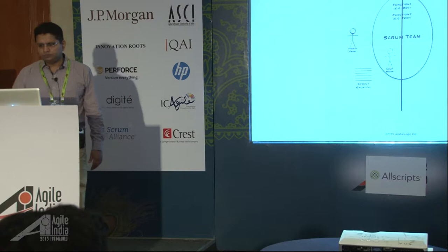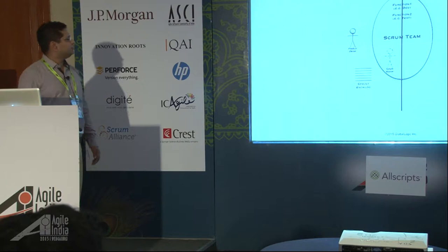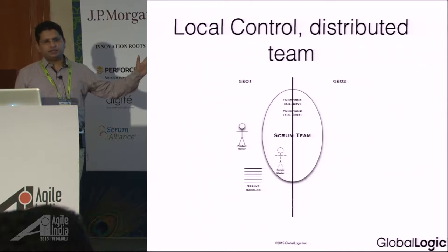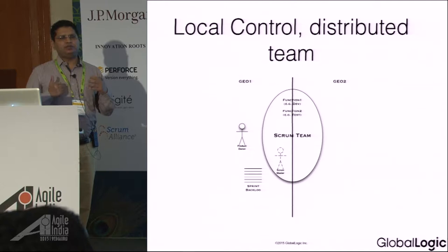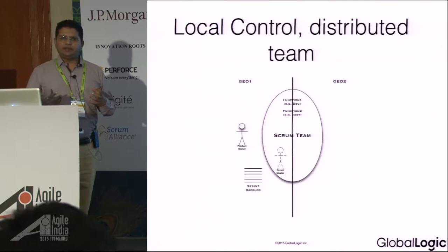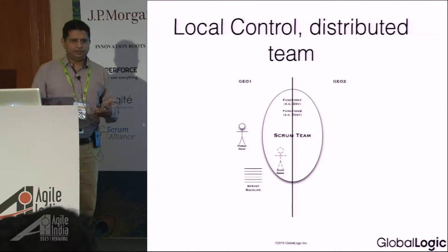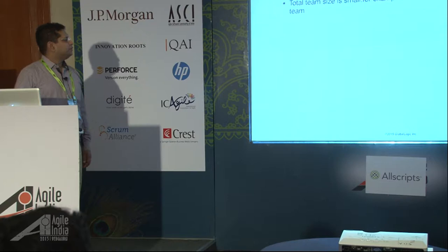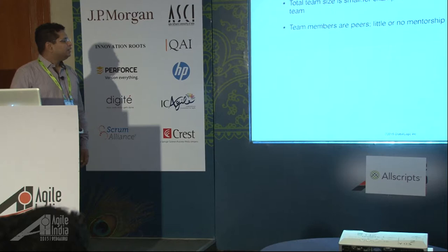These are structural patterns. The first is 'local control, distributed team,' where the product owner and the Scrum Master are on-site, with some team in the distributed location and certain people in India. This situation happens when, for example, you start a startup, you have certain front-end developers, and you want to extend your team by adding back-end developers from India. This is most useful when team size is small — four to eight persons — and team members are peers with little or no mentorship required.